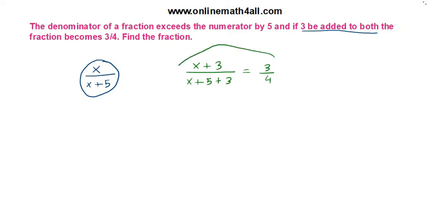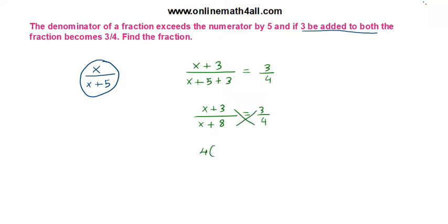We have to solve the equation: (x + 3) divided by (x + 8) equals 3/4. Now we can do cross multiplication — we get 4 times (x + 3) equals 3 times (x + 8). The numerator on the left side is multiplied by the denominator on the right side, and vice versa. This is cross multiplication.